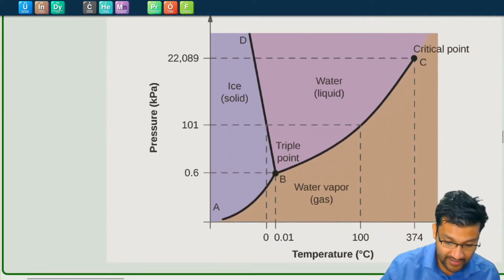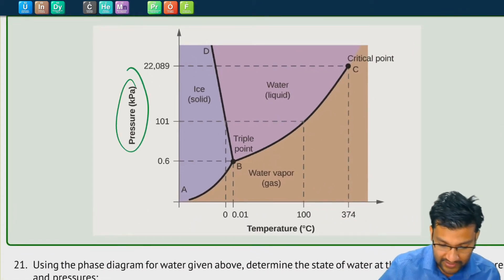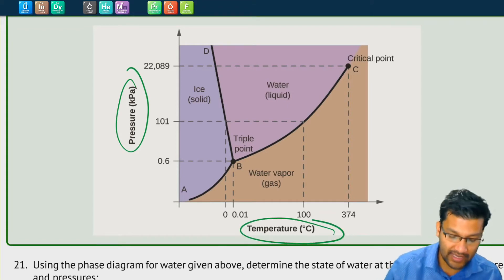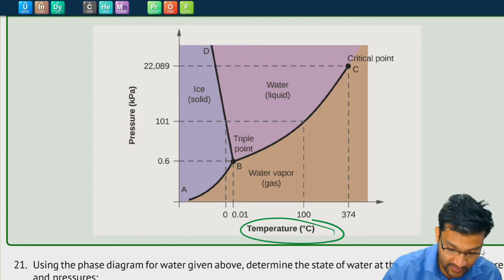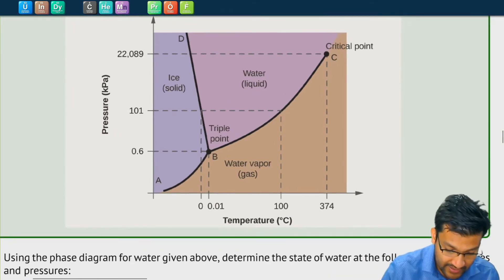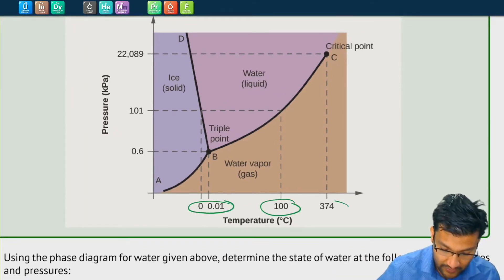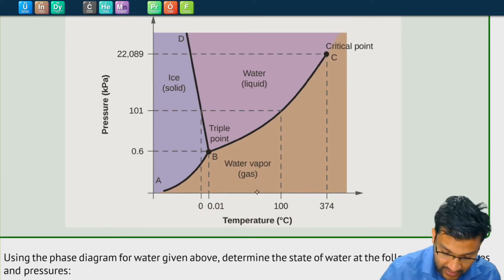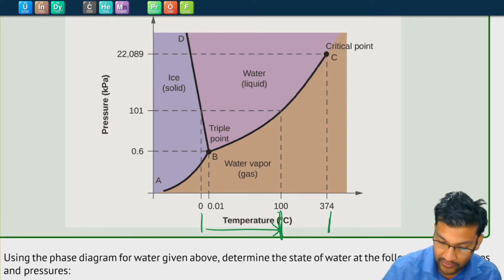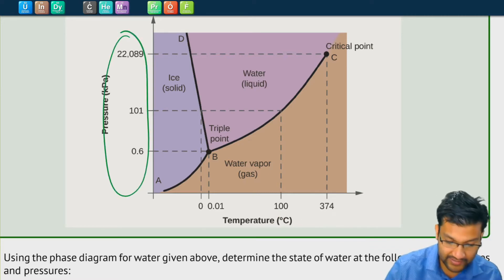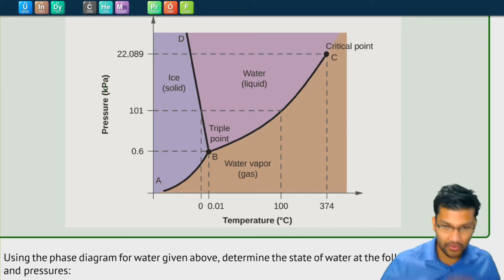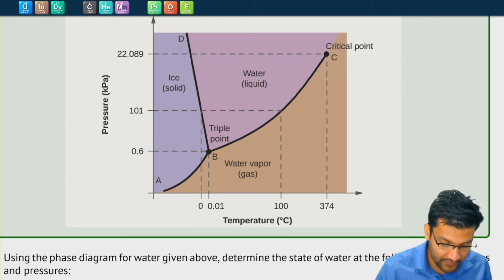A phase diagram is simply a diagram with pressure on one axis and temperature on another axis, and it tells us exactly what state of matter something will be in at a certain temperature or pressure. Now in this diagram, as with most phase diagrams, you might see what we call a logarithmic scale. For example, here to here is 100, but from here to here is another 274 — those don't seem even, but that's because we're using a log scale. We use log scales to show a wider range of temperatures and pressures.